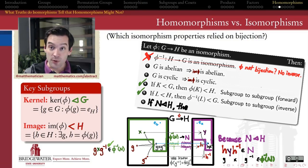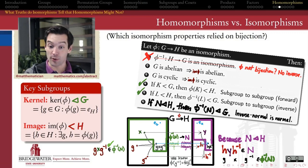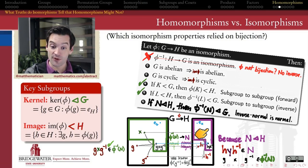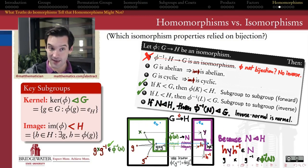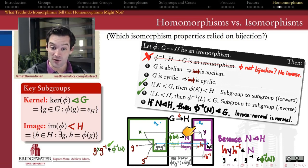We get this powerful statement: if we pick any normal subgroup of H, the inverse image of that normal subgroup will be not only a subgroup of G, but a normal subgroup of G. So homomorphisms, via their inverse images, take normal subgroups of the target group to normal subgroups of the domain group. This can be a powerful way to discover more normal subgroups of G besides just the kernel, which is the inverse image of the trivial normal subgroup containing only the identity.